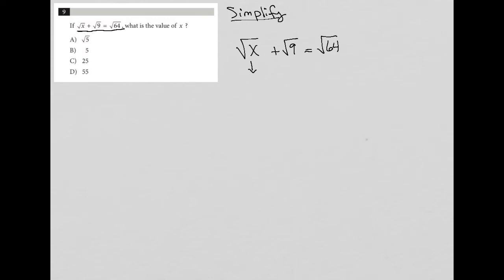Well, the square root of x I can't do anything with, so I'm going to just keep that as square root x. The square root of 9, however, I could say is a positive 3, and the square root of 64 I could also say is a positive 8.